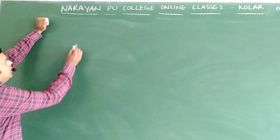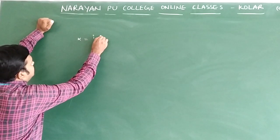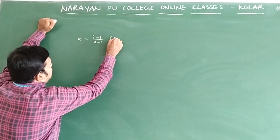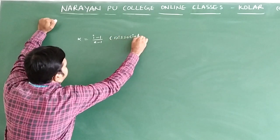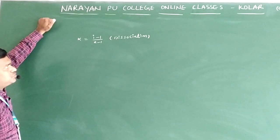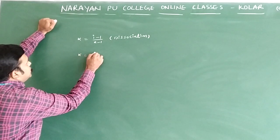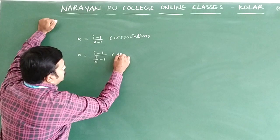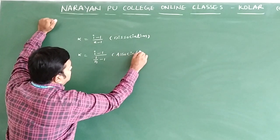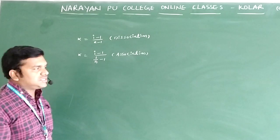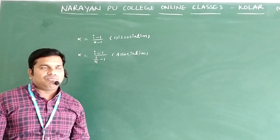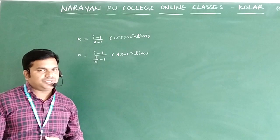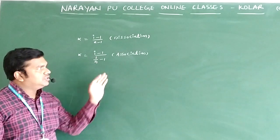Here is one more formula related to this calculation. α = (i - 1)/(n - 1) — this is for dissociation. And α = (i - 1)/(1/n - 1) — this is for association. We can use these two formulas when we need to find the degree of association or degree of dissociation from a given i value and n value.